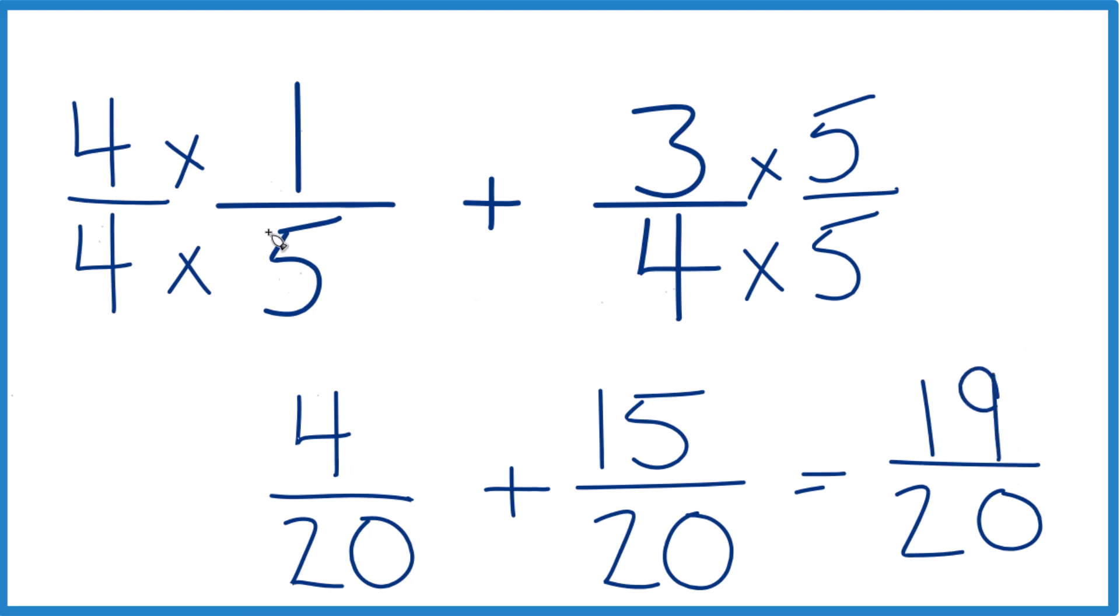So in answer to our question, 1/5 plus 3/4 equals 19/20. This is Dr. V, and thanks for watching.